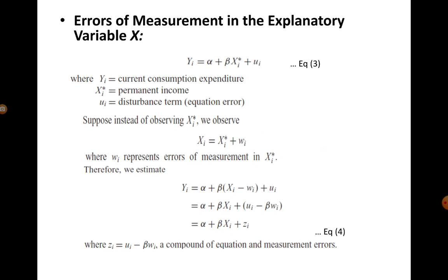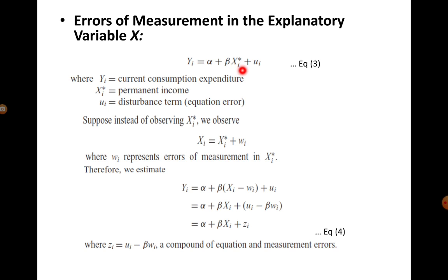Now let's look at the other type of measurement error — when there is an error in the explanatory variable X. The example is: yi is current consumption expenditure, and it is a function of α + β·xi* + ui, where xi* is permanent income. This is again based on the permanent income hypothesis — current consumption is a function of a person's permanent income, but permanent income is not directly observable.